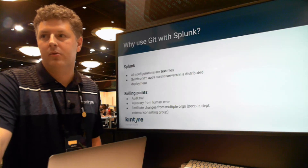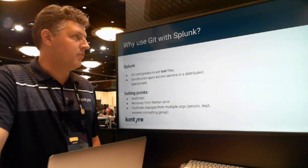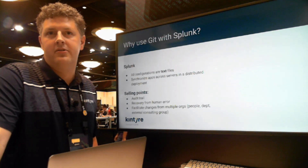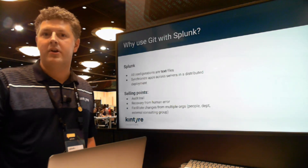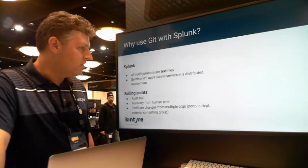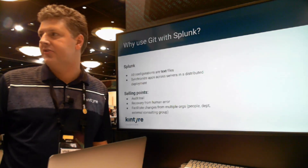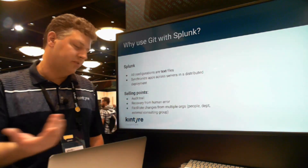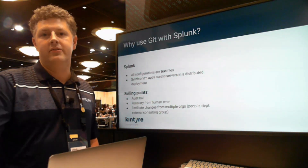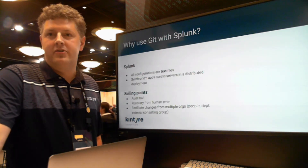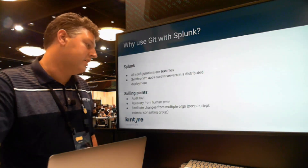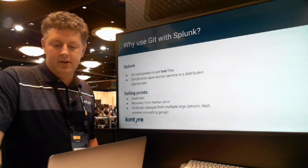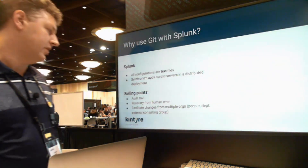The question becomes: why would we try to use Splunk with Git? What's the connection? The first thing to point out is that because all the Splunk configuration files are text files, it becomes a pretty natural fit to use a tool like Git, which primarily just tracks changes to text files. A lot of people would be using it for things like audit trails or trying to recover from a mistake made by an administrator — maybe malicious, maybe accidental. Either way, it gives you a nice way to roll back and provides a sane, safe point of recovery.